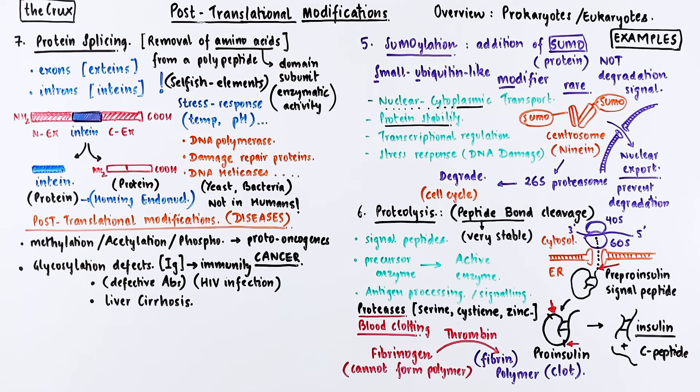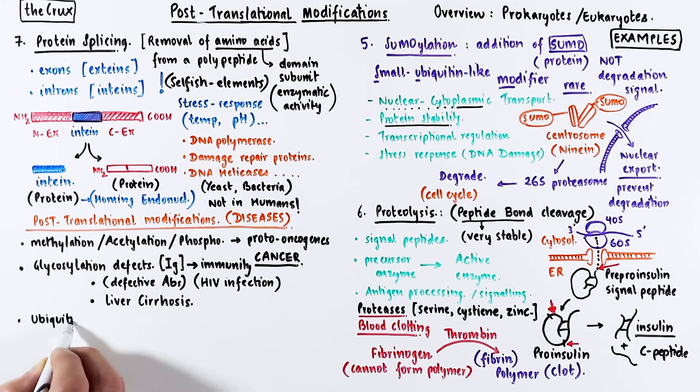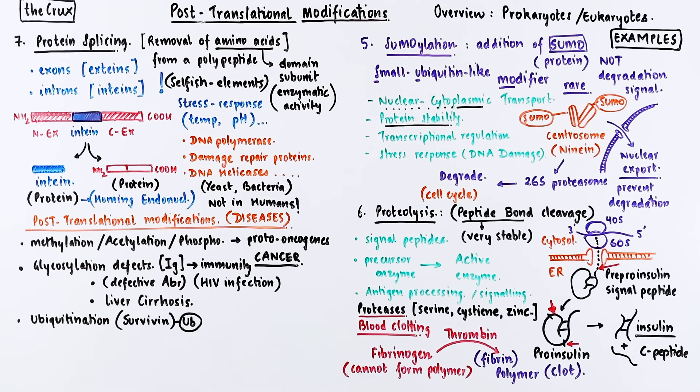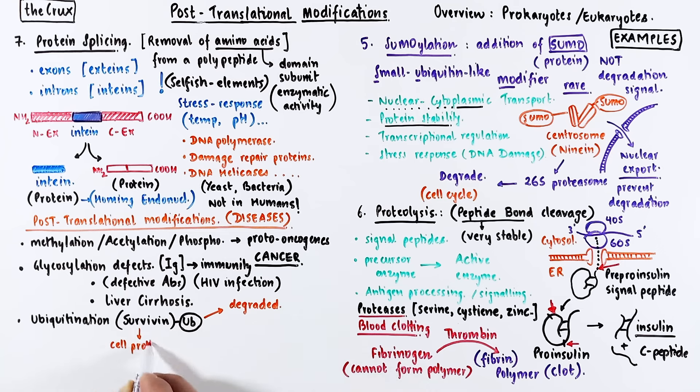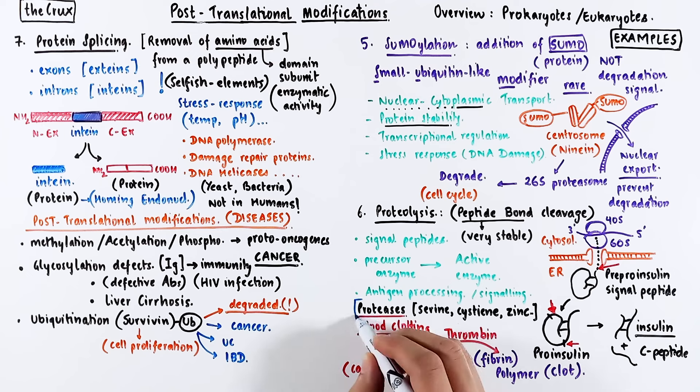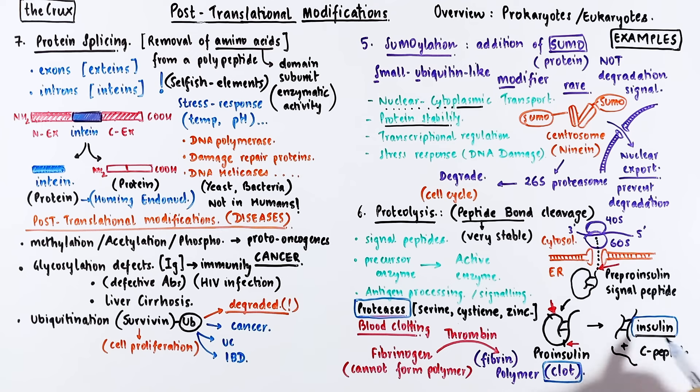Problems associated with ubiquitination can cause diseases. For instance, a protein called survivin, typically marked for degradation, is responsible for cell growth and proliferation. If it's not degraded, it results in cancer and is linked to some cases of ulcers and inflammatory bowel disease. Defects in proteases can result in blood clotting problems and even diabetes if insulin cannot be processed from its precursor. There are many other examples, but this summary video should provide you with a decent idea of post-translational modifications.